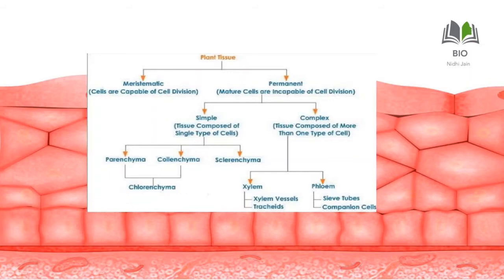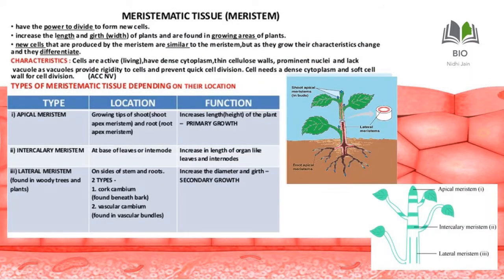Now we will study meristematic tissue in detail. Looking at the diagram in the book, meristematic tissue is divided into three parts. Apical meristem is present at the tip — either shoot tip or root tip. Intercalary meristem is responsible for the growth of branches from the side. Lateral meristem increases the girth and thickness of the plant. So there are three types of meristematic tissue in plants.